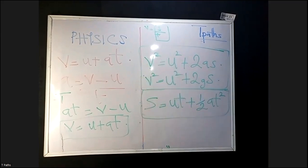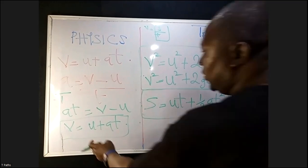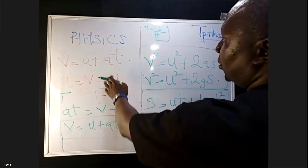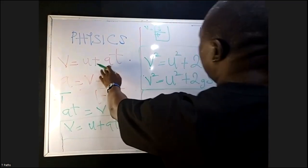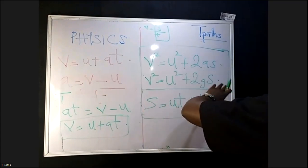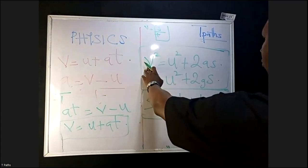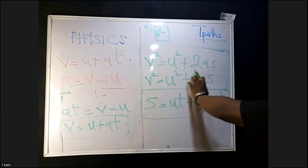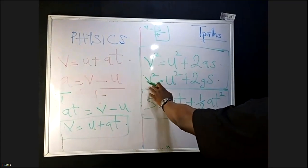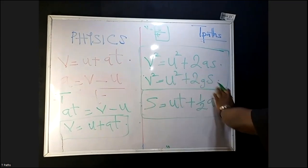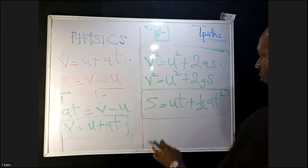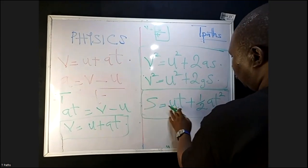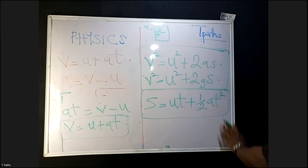The first formula is V = U + AT. The second one is V² = U² + 2AS, or V² = U² + 2gS. The third one is S = UT + ½AT².